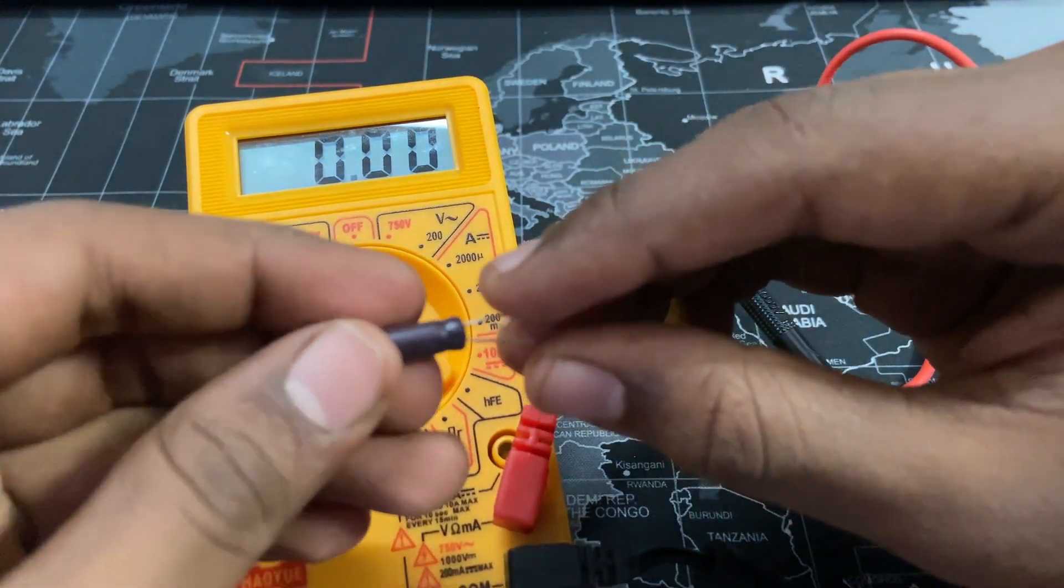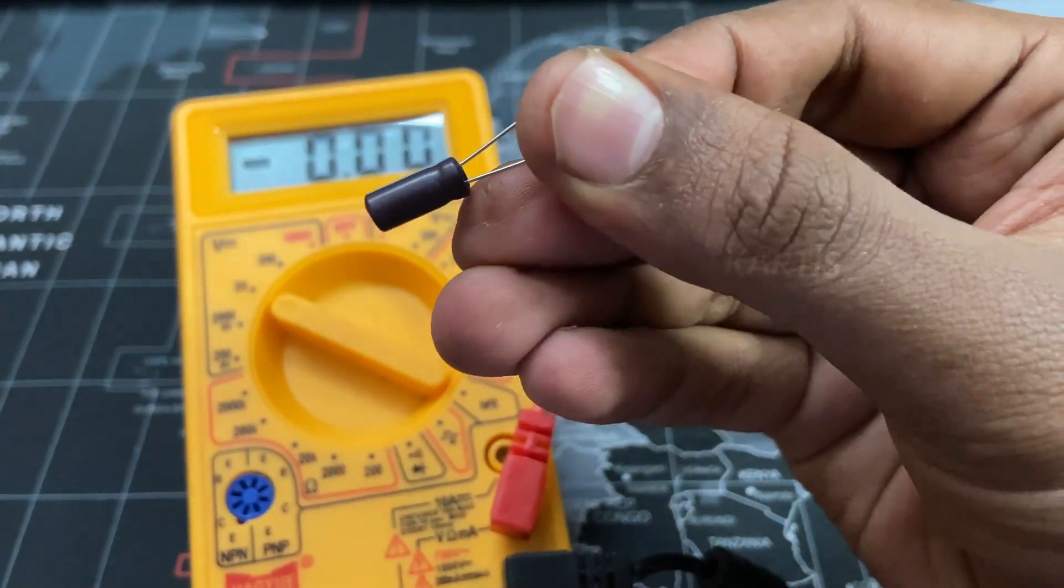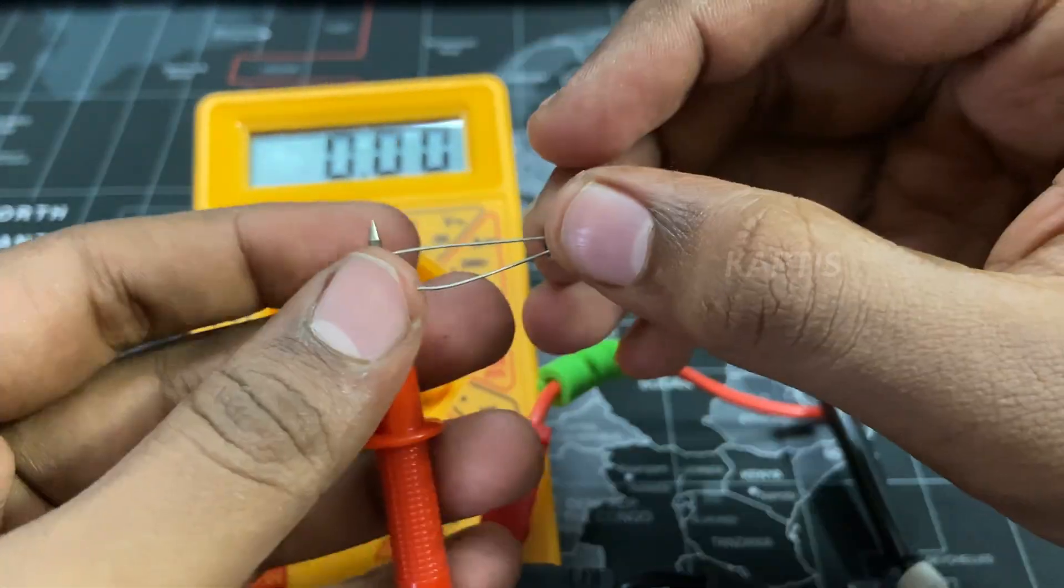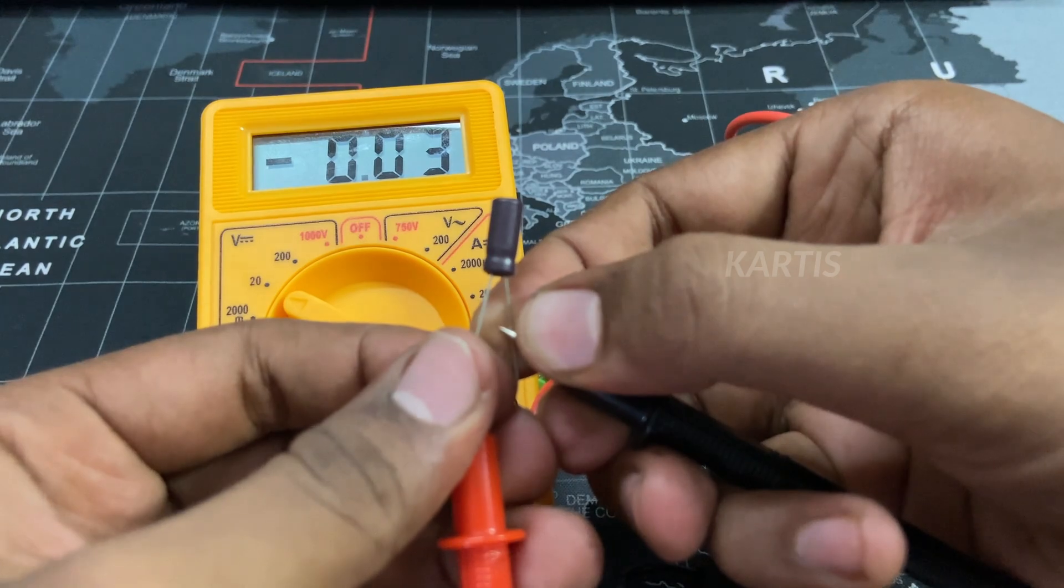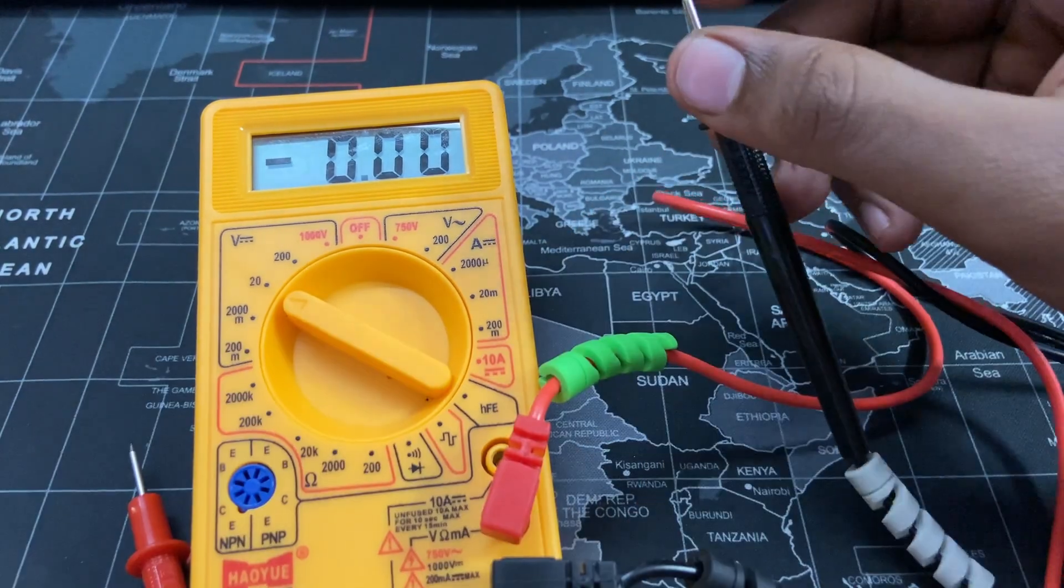This is a 3.7V battery, 2500mAh. So we will check this, plus and minus. This is 4V, which means this battery is 4. So this is a rechargeable battery. This is a good battery. So we have to charge the capacity level. Long terminal is plus, short terminal is minus. If the capacity is 0.03V, it will be 0.